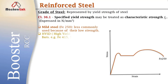The second type of bars are HYSD bars, or high yield strength deformed bars. These bars comprise Fe 415 and Fe 500. Their graphs will be like this. Notice the difference between these graphs.